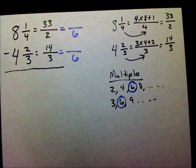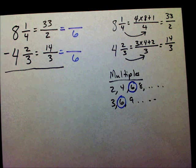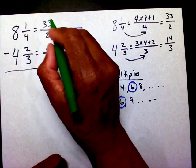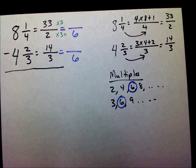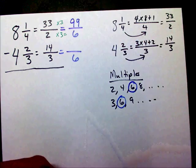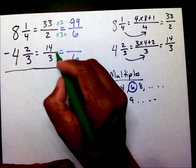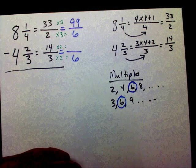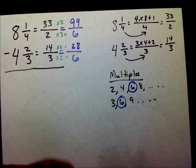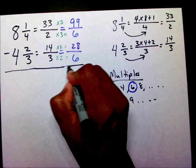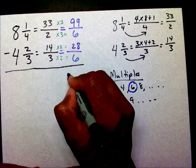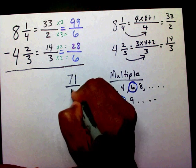Now I need to find my new numerators. 2 times 3 is 6, and 33 times 3 gives you 99. Then 3 times 2 is 6, and 14 times 2 is 28. Now that we have the same denominator of 6, we can subtract. 99 minus 28 is going to give you 71 over 6.